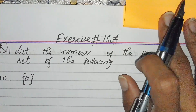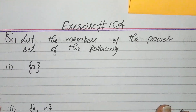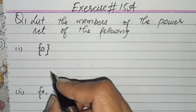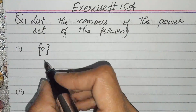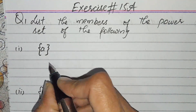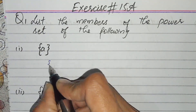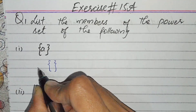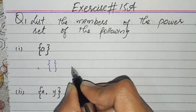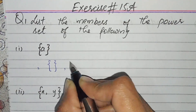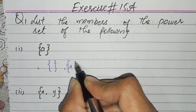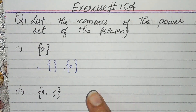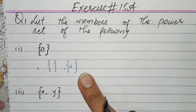We have to write all the subsets of a set. You know that the empty set is also a subset of the set. The empty set is in the set, and this is the power set of this set.